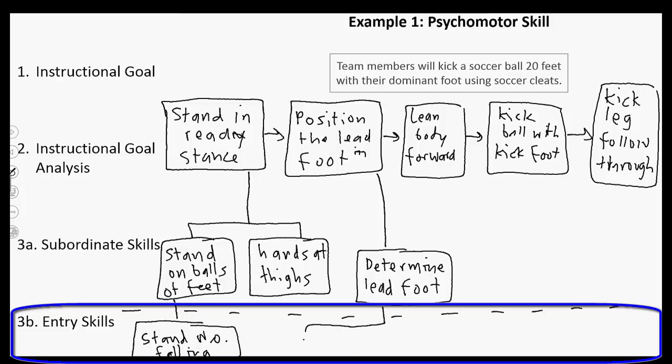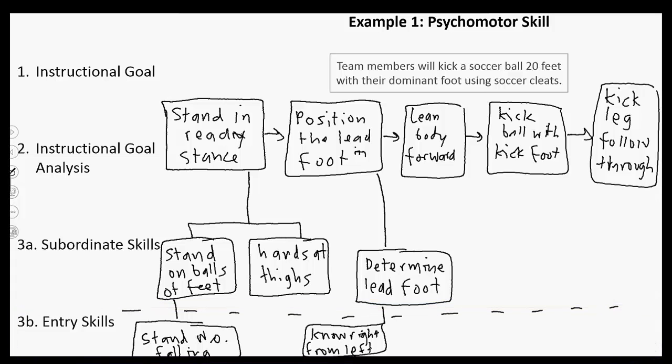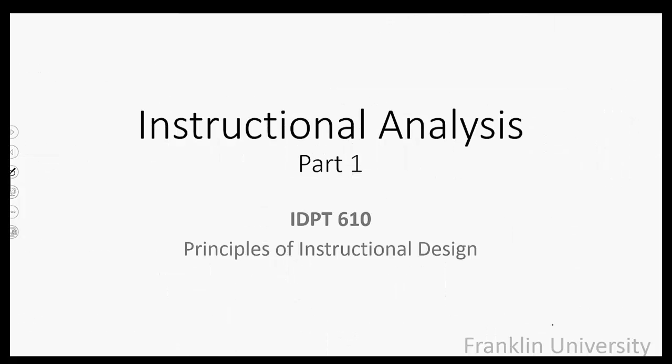For determining their lead foot, maybe they need to be able to distinguish right from left — that could work as an entry skill. You can see how I could continue working through all of these components to come up with subordinate skills and entry skills that learners need to complete the instructional goal effectively. This is part one of how to do an instructional analysis. In the next video I'll show how to do it for an intellectual skill.